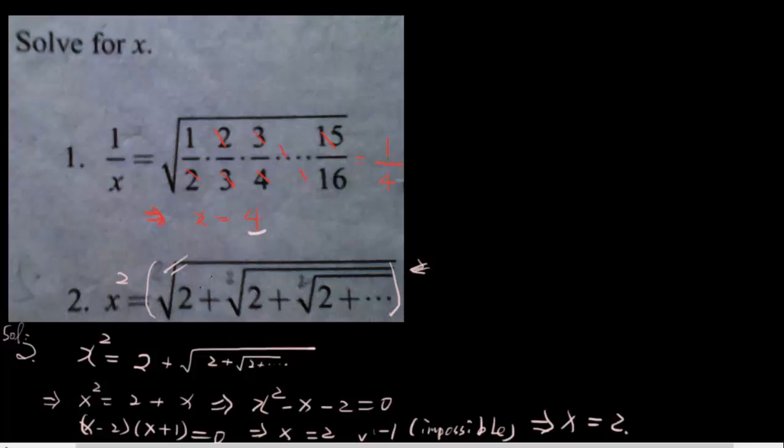And for question number two, we've got x equals this one, and that is the root. We've got square, square, square, and this square. Omit this root, so we got x squared is equal to 2 plus the root of 2 plus the root of 2 plus...